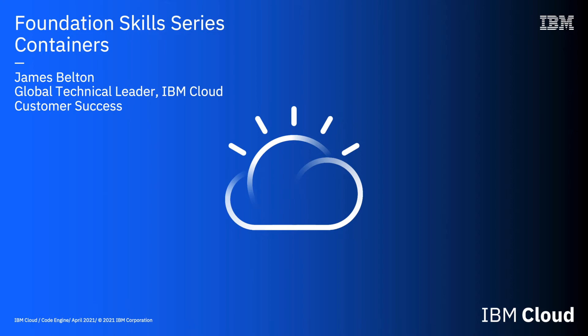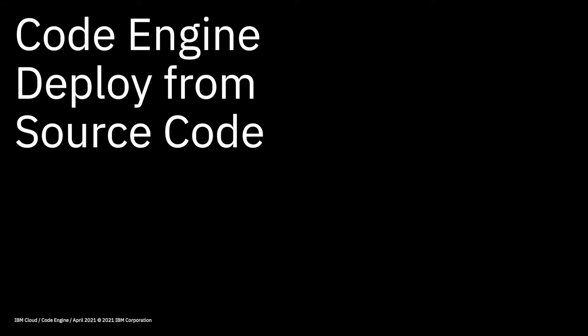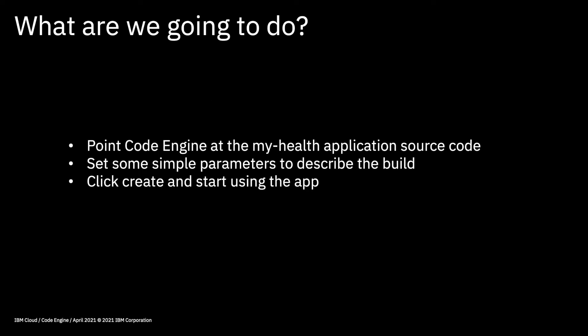Hi there and welcome to this video in the IBM Cloud Foundation Skills series. In this video we're going to use Code Engine to actually deploy an application from source code and get it up and running on the internet. As a quick overview, I'm going to switch over to my IBM Cloud account, point Code Engine at the My Health application source code, set some simple parameters to describe the build, then click create and start using the app.